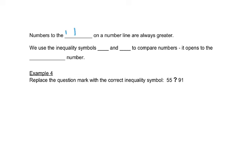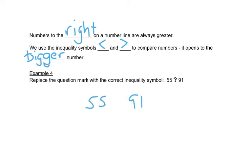Numbers to the right on a number line are always bigger. We use inequality symbols to compare numbers, and the symbol always opens to the bigger number. So if we have fifty-five and ninety-one, we know that ninety-one is bigger, so we make it open towards the ninety-one. Fifty-five is less than ninety-one.